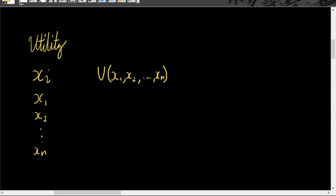To simplify things, which is what most undergraduate textbooks of microeconomics do, we'll set the number of goods to 2 goods. So our new utility function would now be a function of x sub 1 and x sub 2 only.